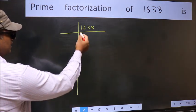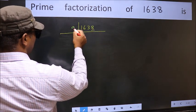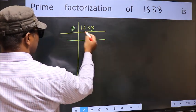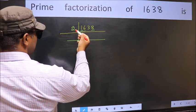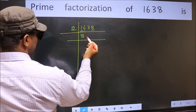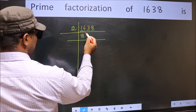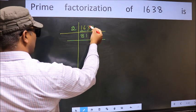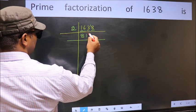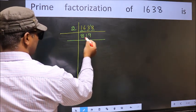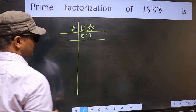In this number, the last digit is 8, so take 2. First number 1 is smaller than 2, so take 2 numbers: 16. When do we get 16 in the 2 times table? 2 eights are 16. The other number is 3; a number close to 3 in the 2 table is 2. 3 minus 2 is 1, carried forward: 18. When do we get 18 in the 2 table? 2 nines are 18. Now the last digit 9 is not even, so 819 is not divisible by 2.